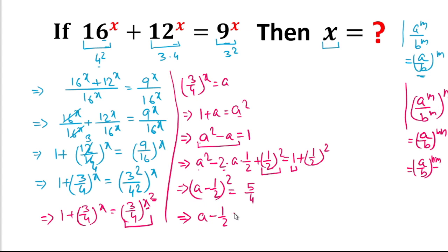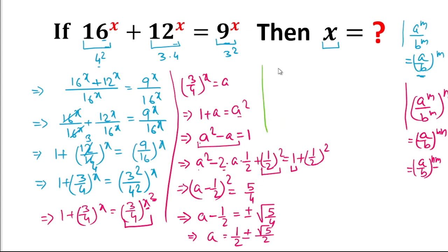So we have (a - 1/2)² = 5/4. Taking the square root of both sides: a - 1/2 = ±√(5/4) = ±(√5)/2. Moving 1/2 to the right: a = 1/2 ± (√5)/2, which gives a = (1 ± √5) / 2.